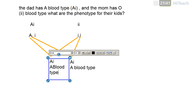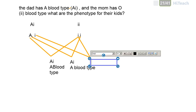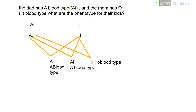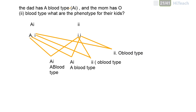For the third kid, he might receive i from his dad and i from his mom, so the genotype is ii — which means blood type O. The fourth kid also gets ii — genotype ii, blood type O. So the phenotypes produced are two with blood type A and two with blood type O.